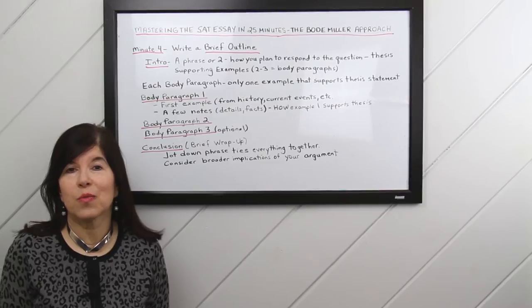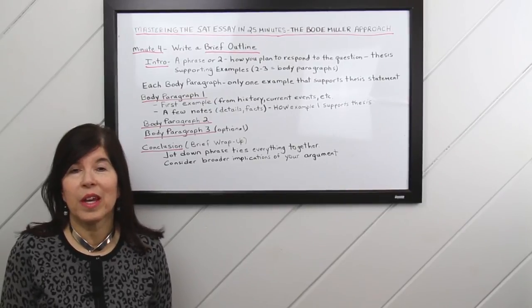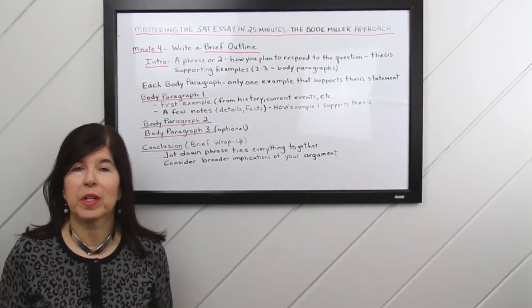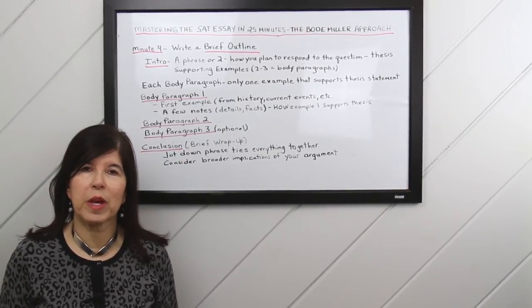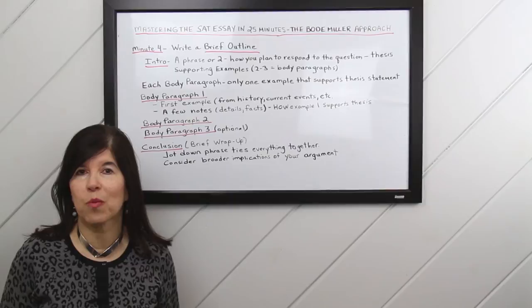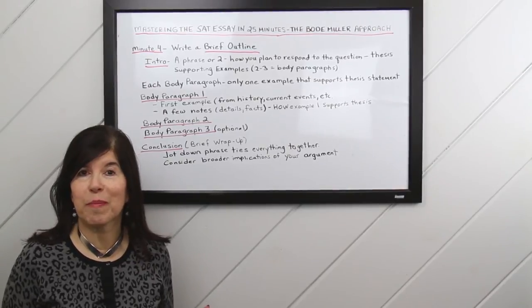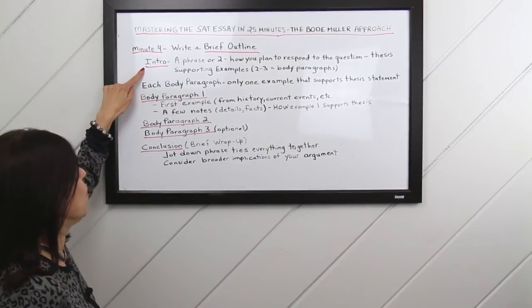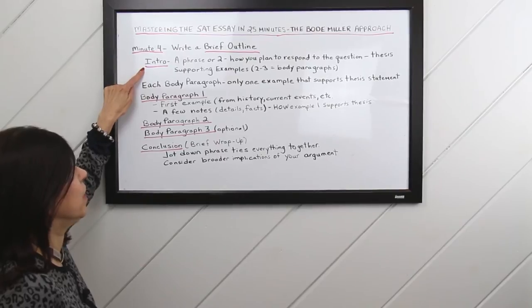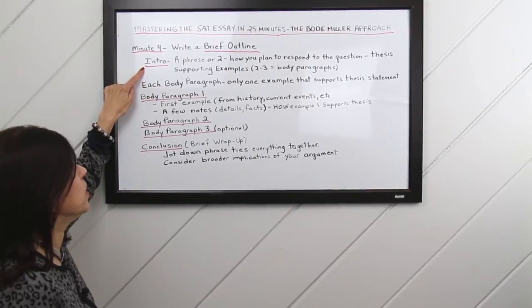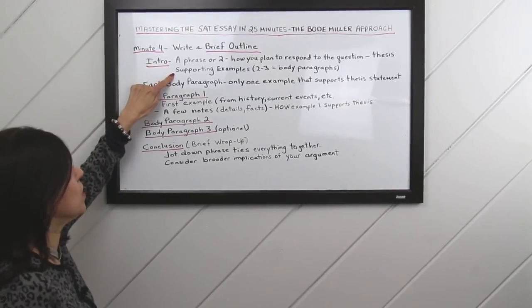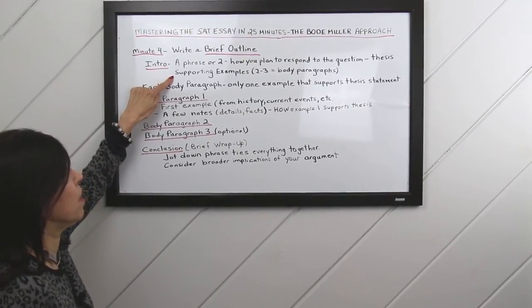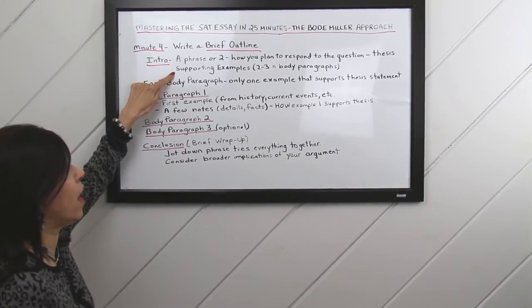So the outline is really just for you, and it's also going to be very brief, but it establishes a structure and it shows whether you have enough information to support the examples you might want to write about. Let's look at a quick format. So first you'll have your intro, and this is just a phrase or two, how you plan to respond to the question. And that's going to be your thesis. And you might want to jot down two or three supporting examples you can use, which will become your body paragraphs.